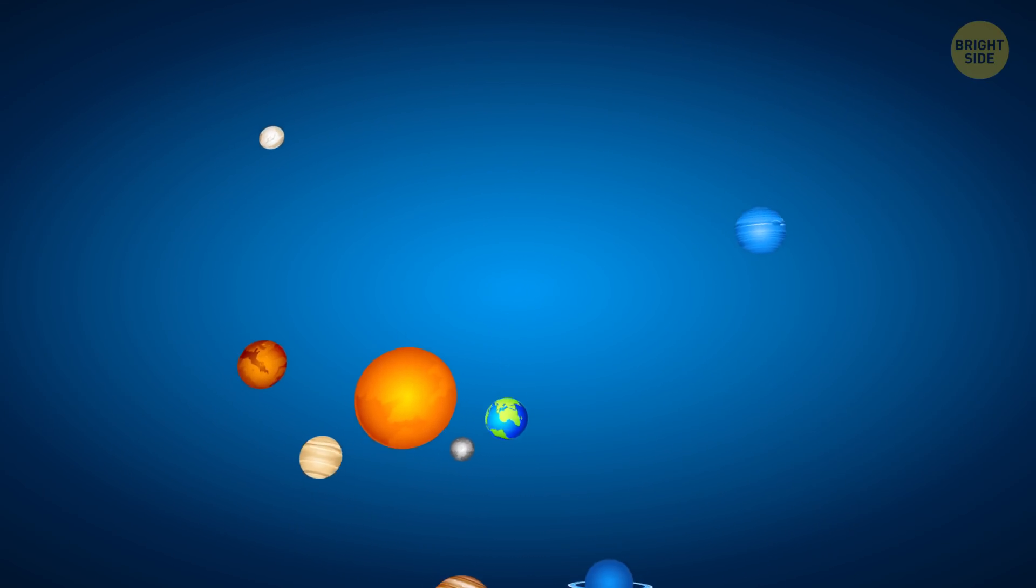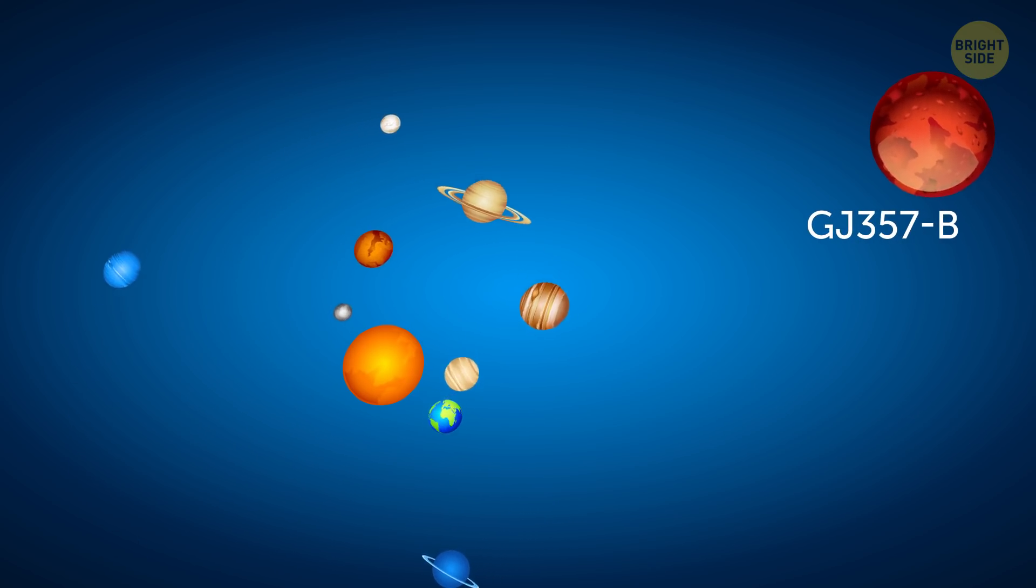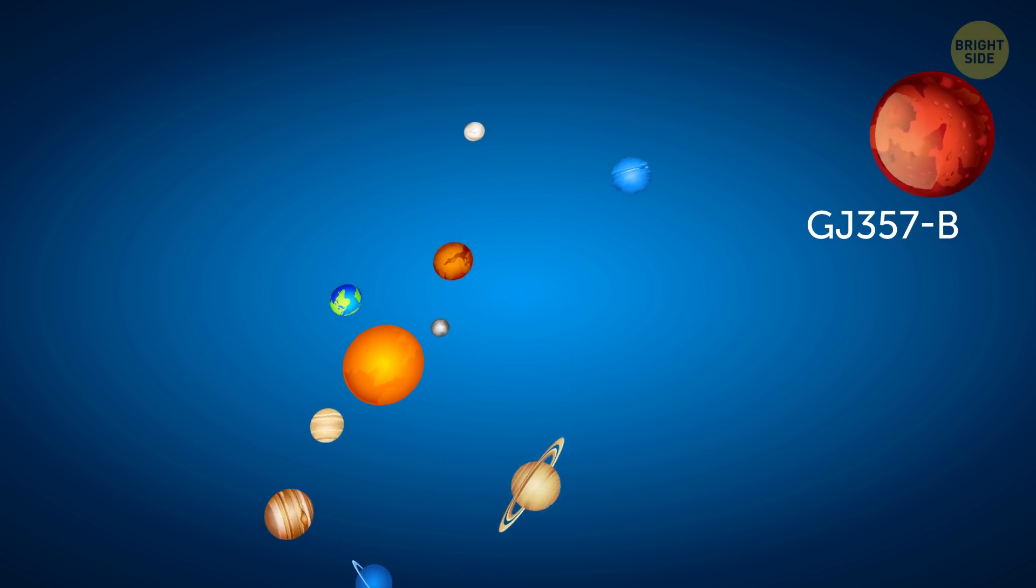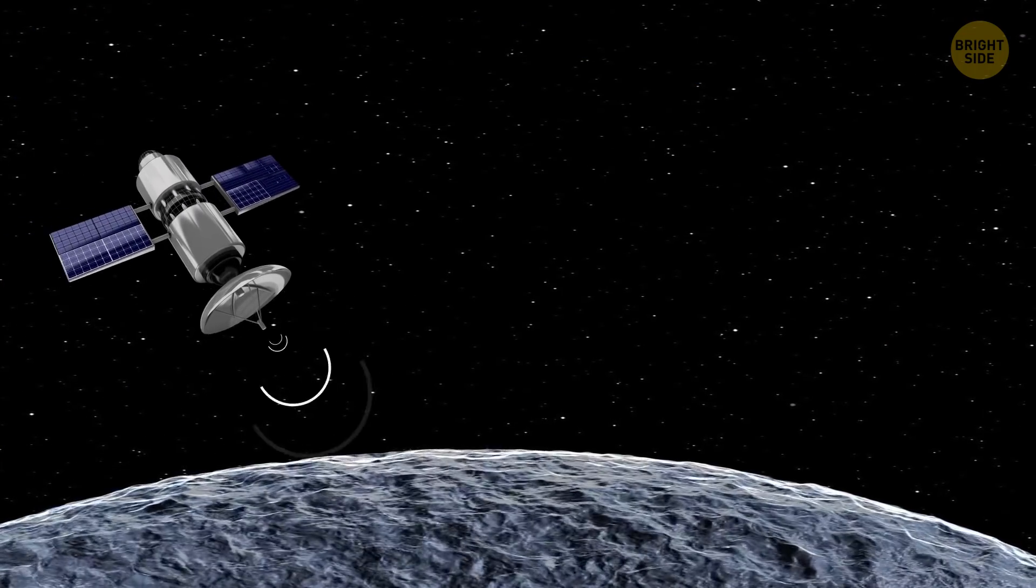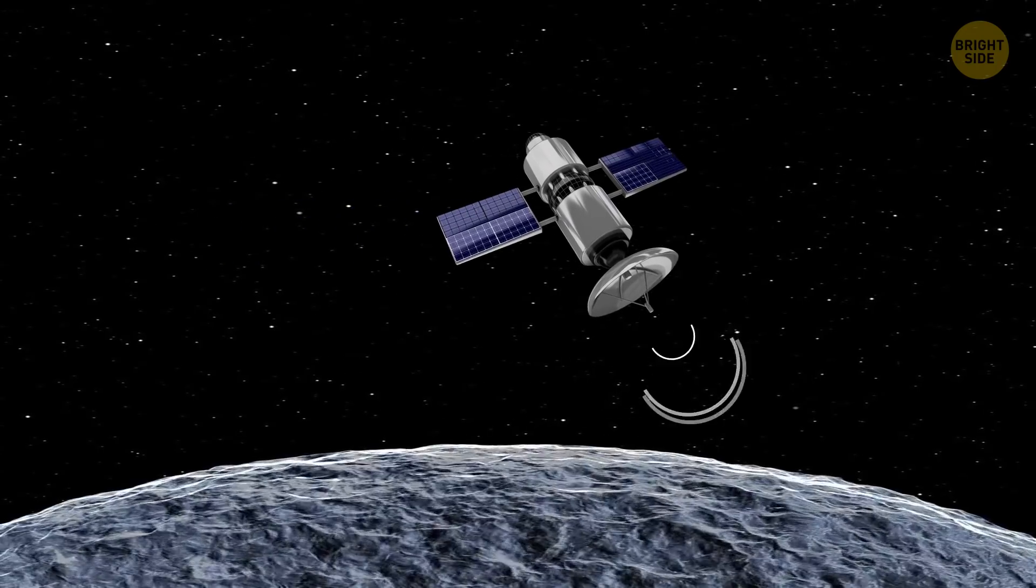Scientists have discovered planets beyond our solar system before, but GJ357b is one of the closest to Earth. In fact, it's one of the few whose atmosphere can be studied by scientists, once they determine if it has one.